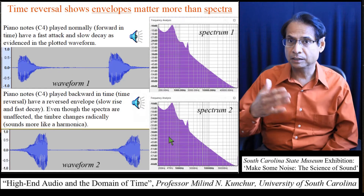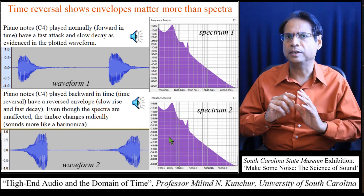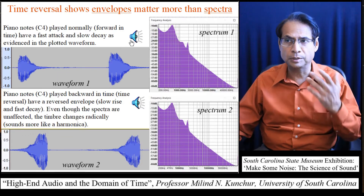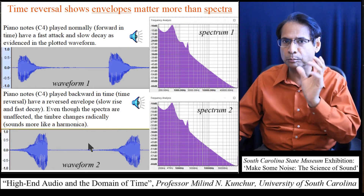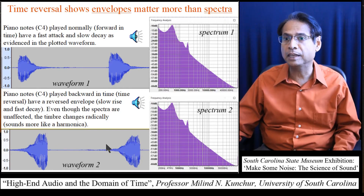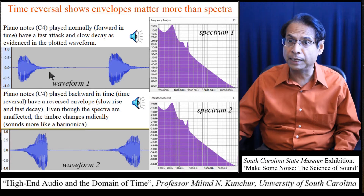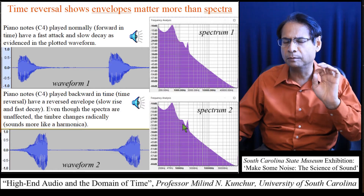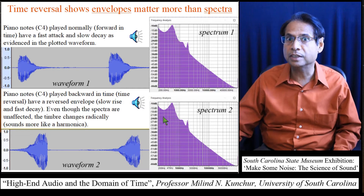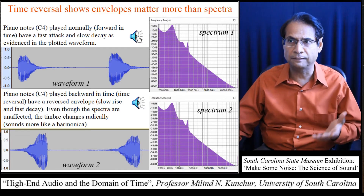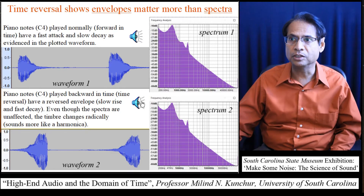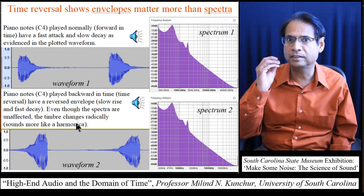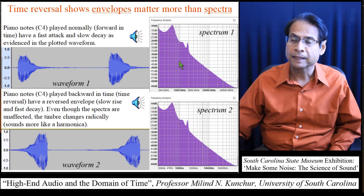To show this more clearly: a piano note is played normally, then in reverse. In software, you can reverse the waveform so you have exactly the same thing played backwards. The piano has a fast attack and slow decay; reversed, it becomes a slow rise and fast decay. If you look at the spectra of the two, they're exactly the same — a mathematical fact. But listen to how different the timbre is. It went from sounding like a piano to sounding like a harmonica.